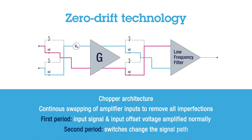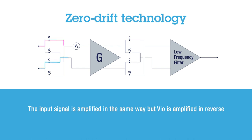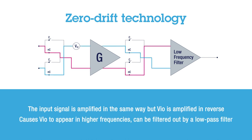In the second cycle, the switches change the signal path. The input signal is then amplified in the same way, but the input offset voltage is amplified in the opposite direction. This will cause the input offset voltage to appear in higher frequencies where it can be filtered out by a low-pass filter.